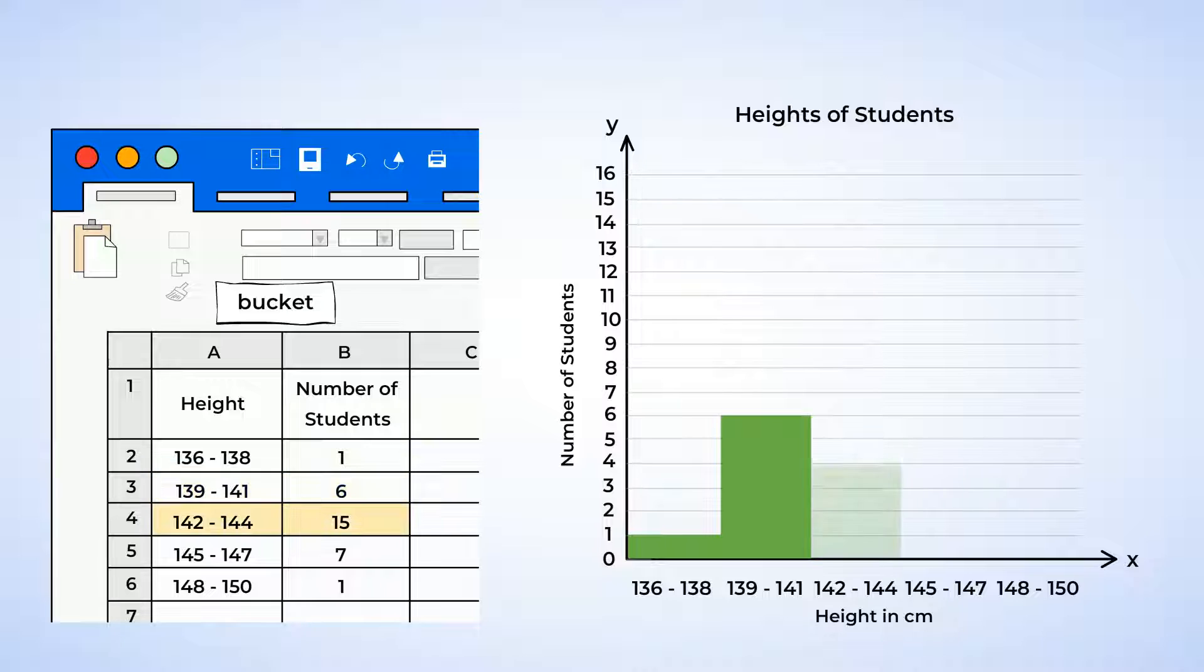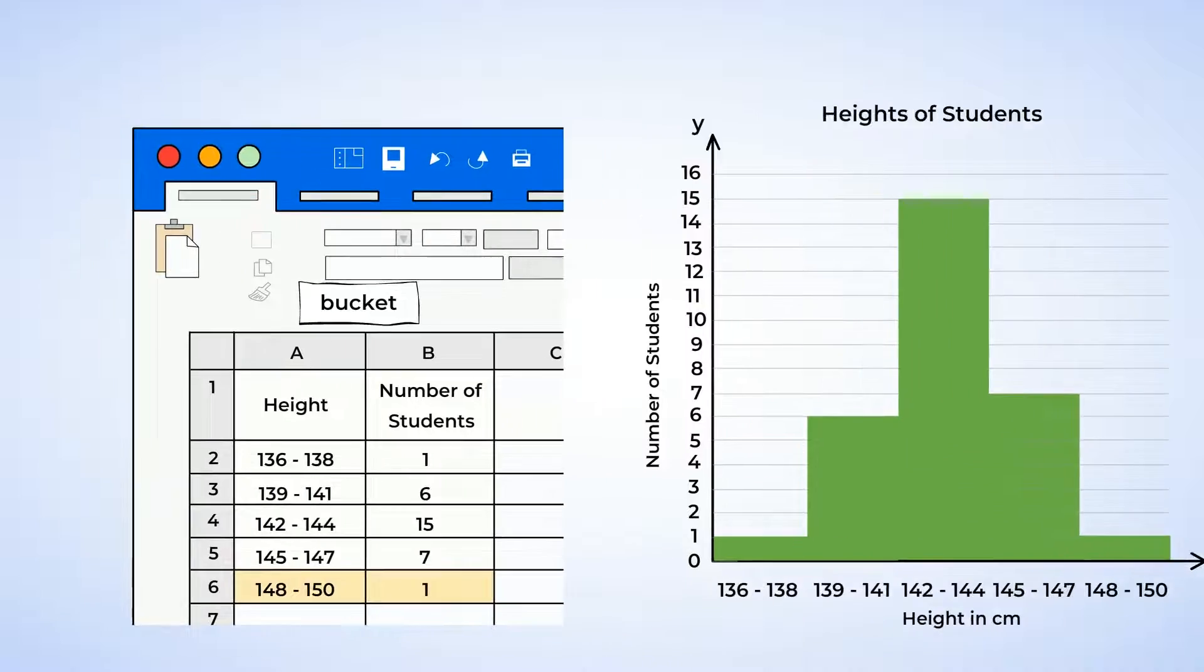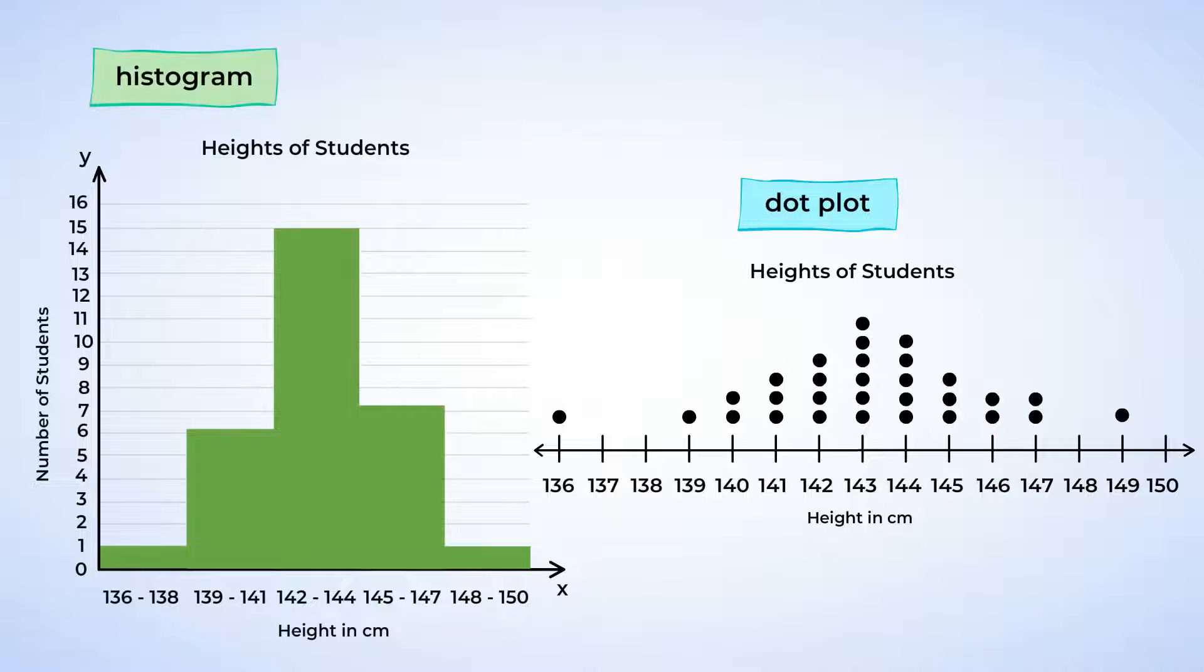Now, let's do the same thing for the rest of the bins the same way, and voila! Now, let's look at the dot plot and the histogram together.